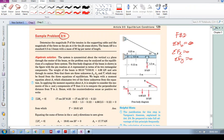Determine the magnitude T of the tension in the supporting cable and the magnitude of the force on the pin at A for the jib crane. Okay, so this guy can move back and forth. The beam AB is a standard 0.5 meter I-beam with a mass of 95 kg per meter of length.